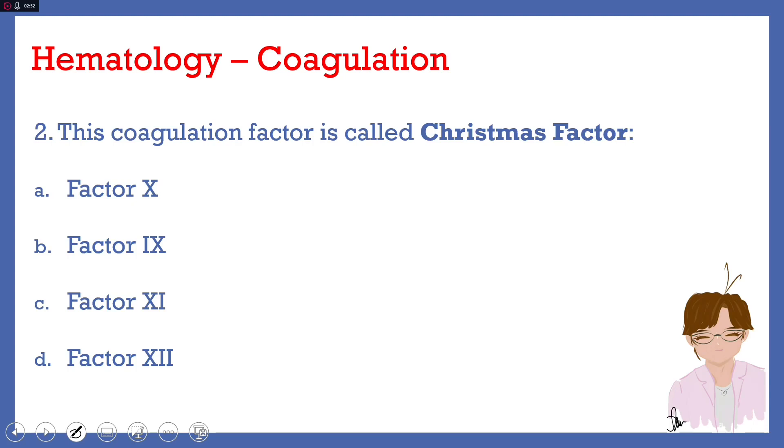Number 2. This coagulation factor is called Christmas factor. A, factor 10. B, factor 9. C, factor 11. Or D, factor 12. Answer here is letter B, factor 9. Factor 9 is known as the Christmas factor, named after the first patient was first described and that patient was named Stephen Christmas.